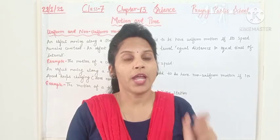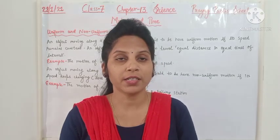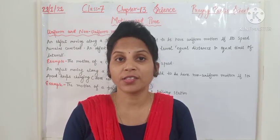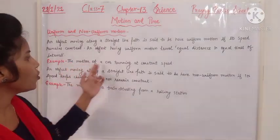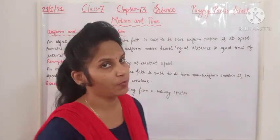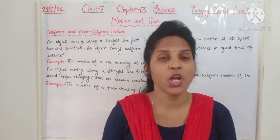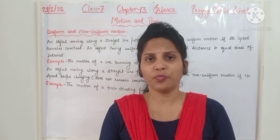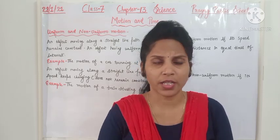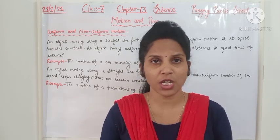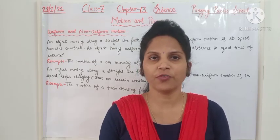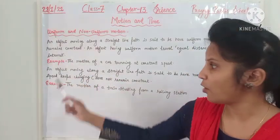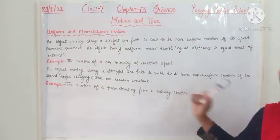An object is said to have uniform motion when it covers equal distances in equal time intervals, meaning it has constant speed. For example, the motion of a car running at constant speed — suppose a car is moving with 10 meters per second and that speed does not change. That type of motion is called uniform motion.